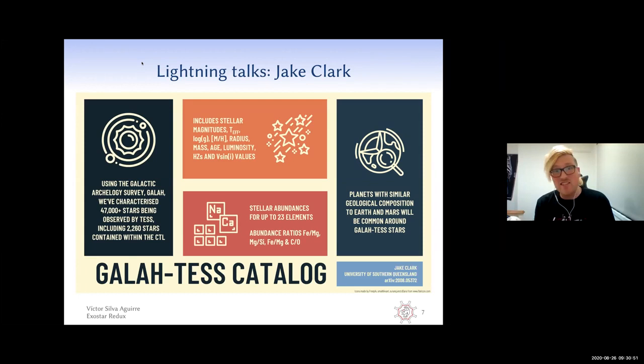I've been able to put an extraterrestrial spin on that data to calculate the stellar radius, mass, age, luminosity, and habitable zones for over 47,000 stars. And not only do we have physical parameters for these stars, we also have chemical parameters as well for up to 23 abundances for each star. And not only that, but we also have abundance ratios.